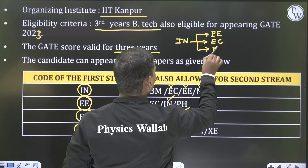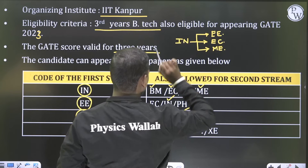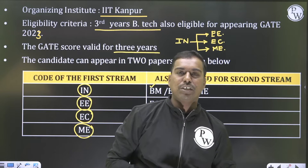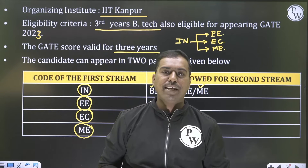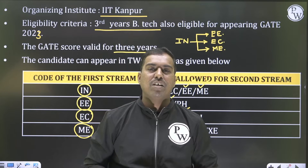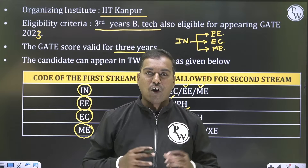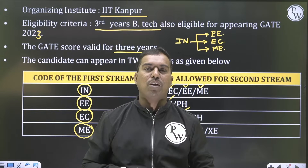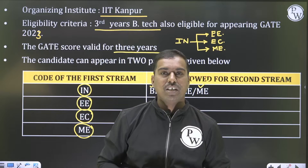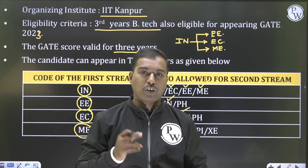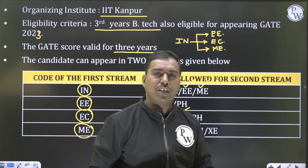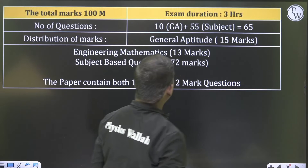Please try to understand this information. The reason why instrumentation has been given as option two especially for mechanical engineering students is mechatronics. There are certain colleges in South India offering mechatronics branch at an extensive level for mechanical engineers, where instrumentation concepts are necessary. That's why Gate mechanical students are eligible to do M.Tech in mechatronics.